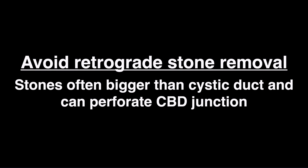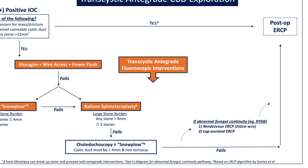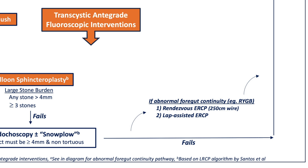Lastly, in our algorithm, if the patient has abnormal foregut anatomy such as a bypass, we will coordinate with our endoscopist to do a rendezvous or lap-assisted ERCP.